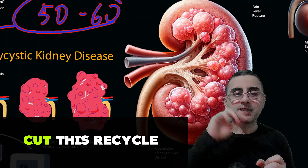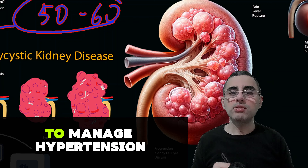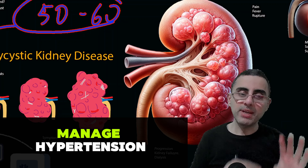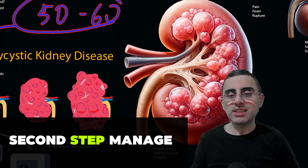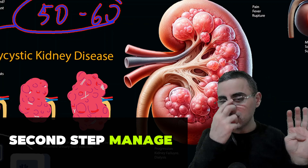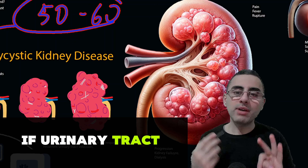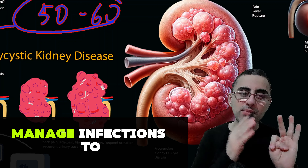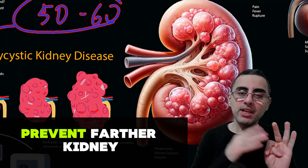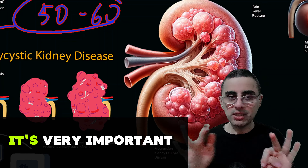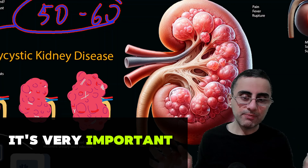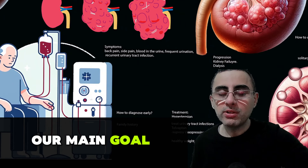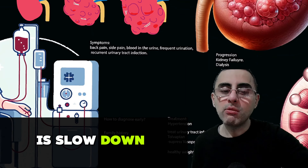We should cut this vicious cycle by managing hypertension — that's the first step. The second step is to manage infections: if urinary tract infections occur, they require treatment to prevent further kidney damage. Our main goal is to slow down progression and manage complications.